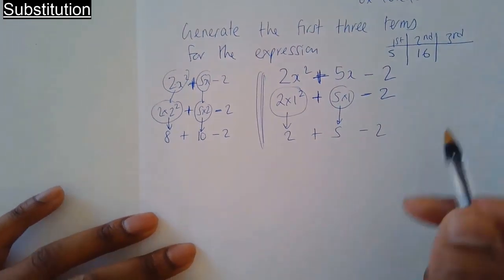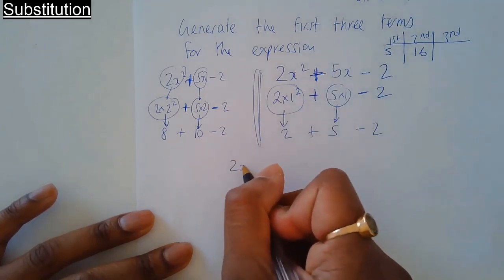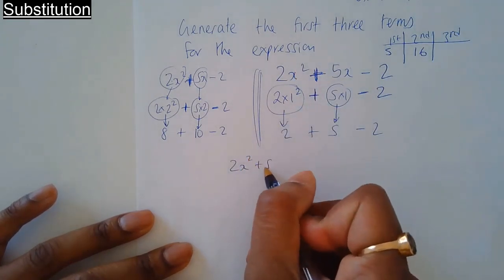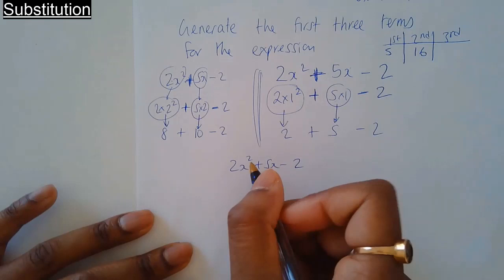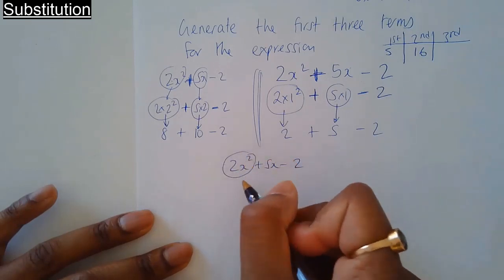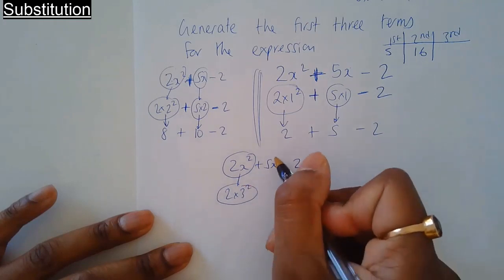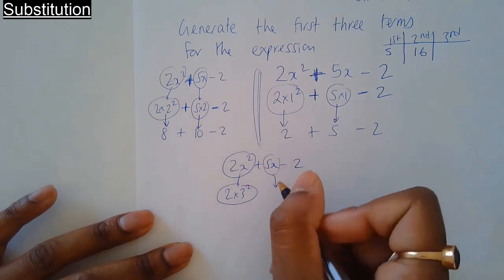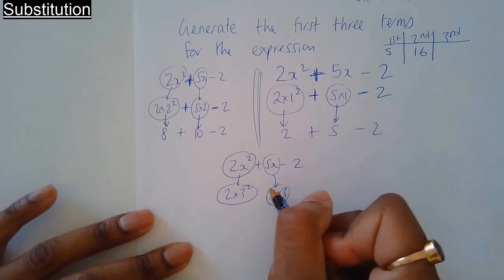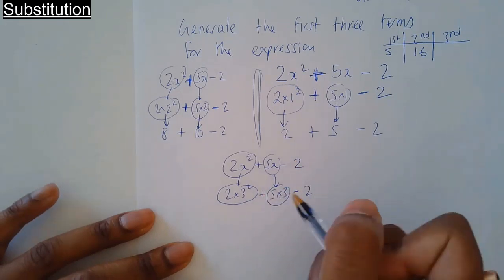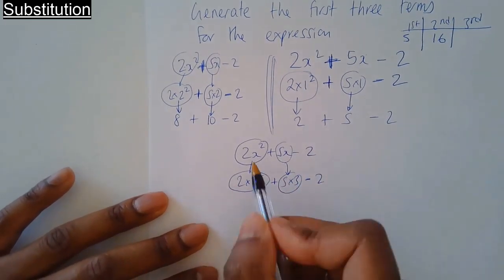Third term, replace the x with 3. 3 squared is 9, 9 times 2 is 18.